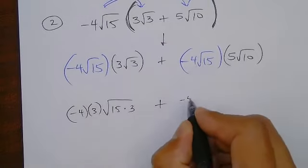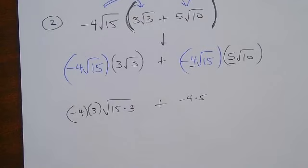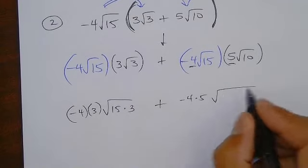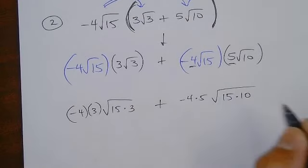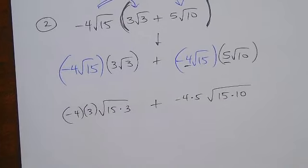And over here, the outside ones are negative 4 times 5 on the outside. And then the inside is 15 times 10, but don't multiply it. Just leave it like that.